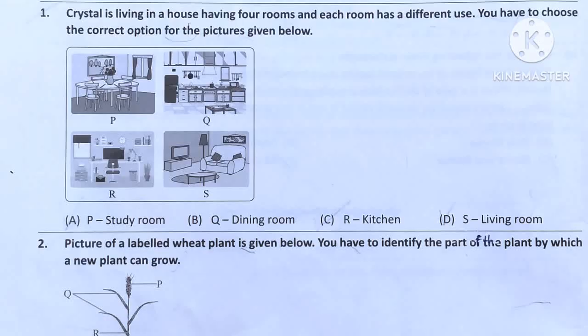Question number 1. Crystal is living in a house having 4 rooms and each room has a different use. You have to choose the correct option for the picture given below. The question is asking which letter is showing the correct room.